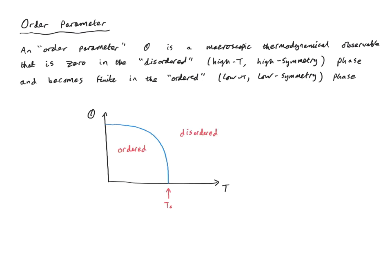An order parameter O is a macroscopic thermodynamical observable that one can measure in an experiment. It takes the value of zero in the disordered, high temperature or high symmetry phase, but becomes finite in the ordered, low temperature, low symmetry phase. A typical graph of the order parameter versus temperature shows zero at high temperatures — the disordered phase — then at T equals T_c the order parameter takes on a finite value and continues to be finite in the ordered phase at low temperature. Symmetry breaking across phase transitions like this is rather ubiquitous, and is one of the reasons why we need to study condensed matter systems on their own terms.